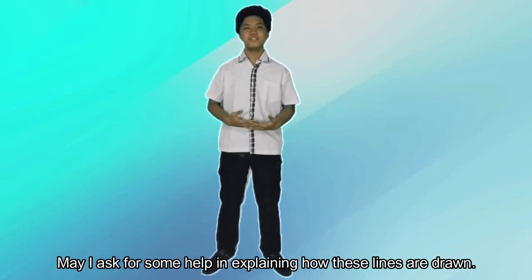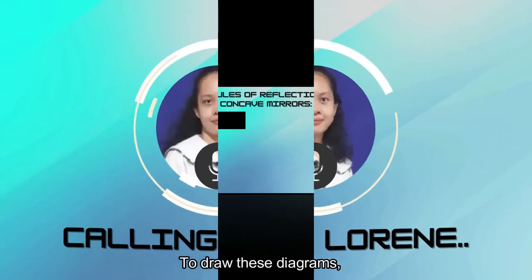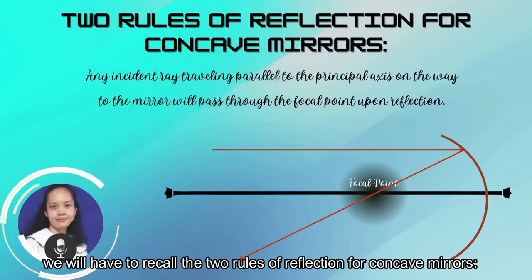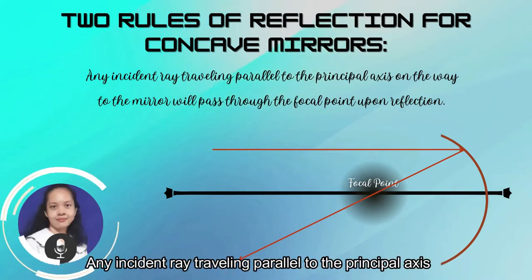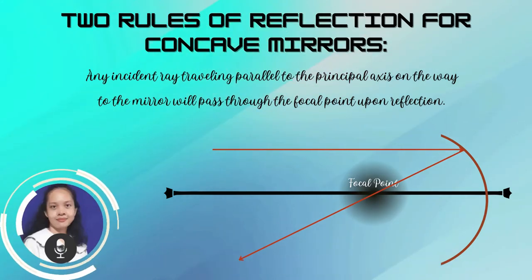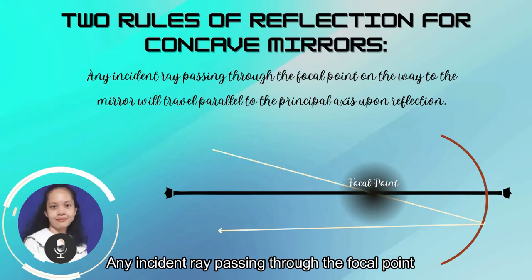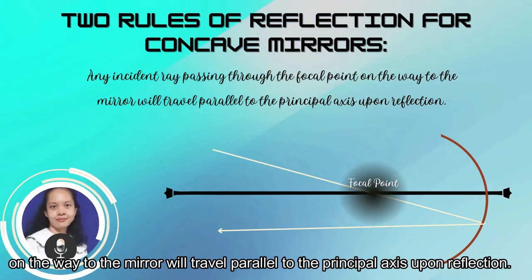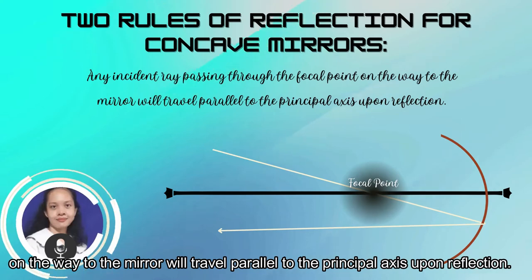Lorena and Ayana, may I ask for some help in explaining how these lines are drawn? Sure Carl, the lines are drawn like this. To draw these diagrams, we will have to recall the two rules of reflection for concave mirrors. The first rule states that any incident ray traveling parallel to the principal axis on the way to the mirror will pass through the focal point upon reflection. The second rule states that any incident ray passing through the focal point on the way to the mirror will travel parallel to the principal axis upon reflection.